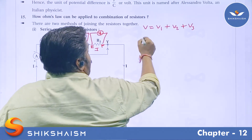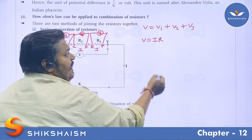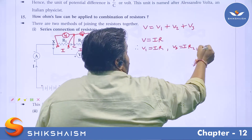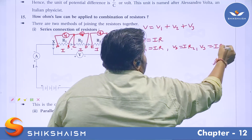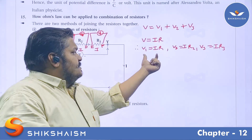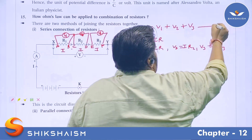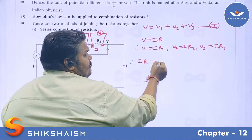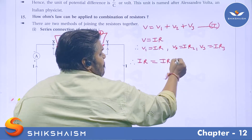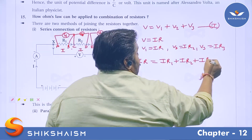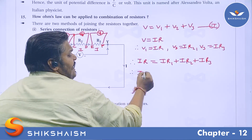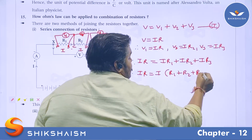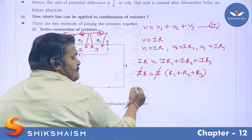According to Ohm's law, V = IR. Therefore, V1 = IR1, V2 = IR2, and V3 = IR3. Substituting these values of V1, V2, and V3 into equation number 1, instead of V we put IR, so we get: IR = IR1 + IR2 + IR3. Taking I common: IR = I(R1 + R2 + R3). Cancelling I from both sides.